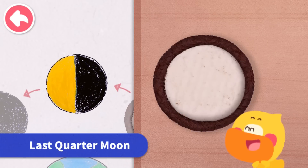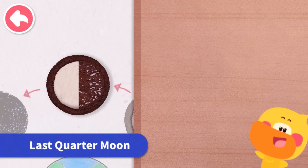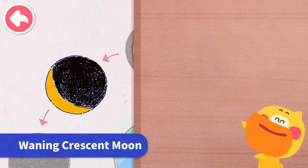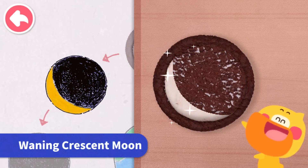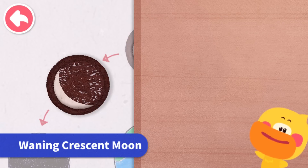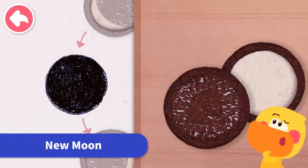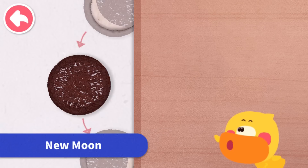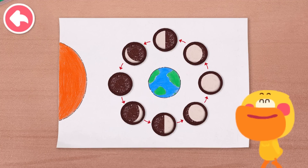Last quarter moon — the semi-circular last quarter moon looks like a hat. Curved waning crescent moon — it looks like an eyebrow. New moon — the new moon is completely dark. Which cookie should I use? A cookie without filling is like a new moon. We are done with the cookie moon phases diagram.